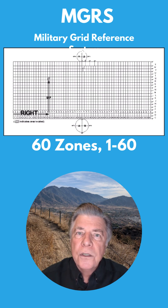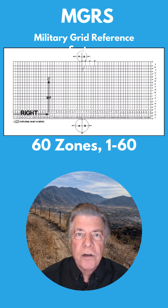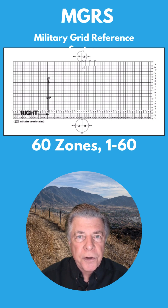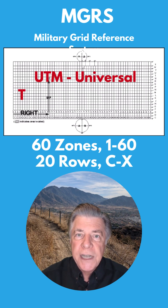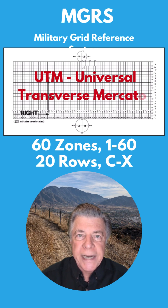Then, 20 rows are added, lettered from south to north, C through X. I and O are omitted. Together, this grid is known as the UTM, the Universal Transverse Mercator Grid.